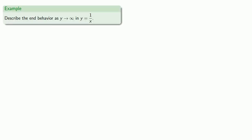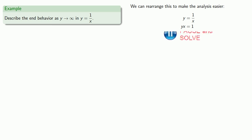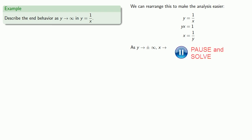Let's try to describe the end behavior as y goes to infinity in y equals 1 over x. We'll rearrange the equation to make analysis easier. From y equals 1 over x, we multiply through by x, giving us yx equals 1. Since y is going to infinity, we solve for x by dividing by y, which tells us x equals 1 over y. As y goes to plus or minus infinity, x is going to be 1 divided by a very large positive or negative number, which means x is going to go to 0.